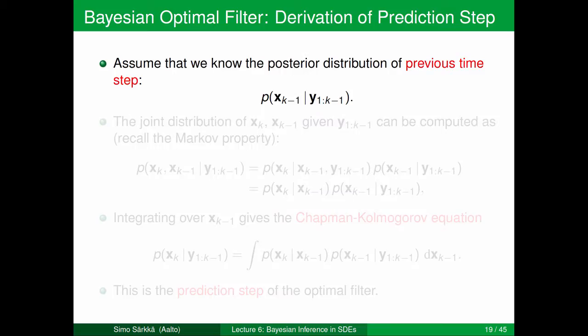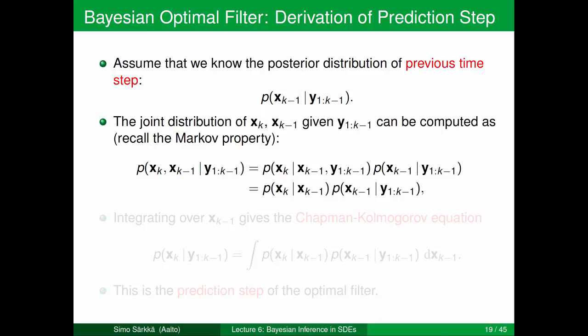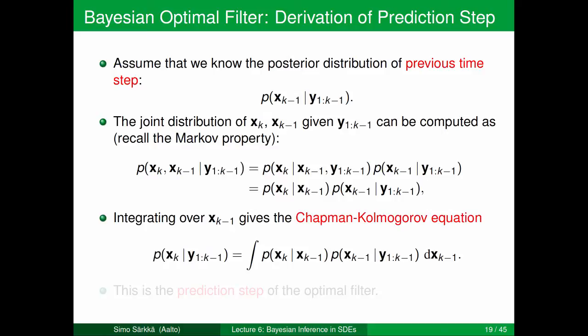How does the Bayesian filter work? Assume we know the posterior distribution of the previous step, p(xk-1 | y1:k-1). We can form the joint distribution of xk and xk-1 given measurements up to k-1, which ends up being the product of the transition density and the previous posterior distribution due to the Markovian property. Integrating over xk-1 gives a version of the Chapman-Kolmogorov equation: p(xk | y1:k-1) equals the integral of the dynamic model times the previous posterior distribution over xk-1. This is the prediction step of the optimal filter.